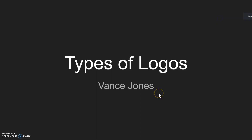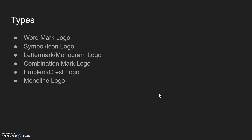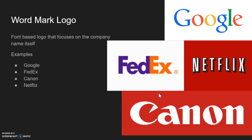What's going on guys, it's Vance. We're going over types of logos — just get into it. The types we're covering are: the wordmark, the symbol/icon, the lettermark/monogram, the combination mark, the emblem/crest, and the monoline.